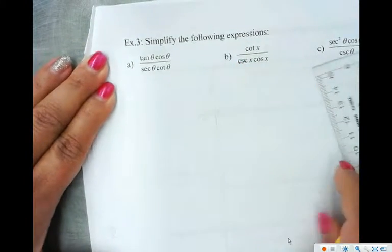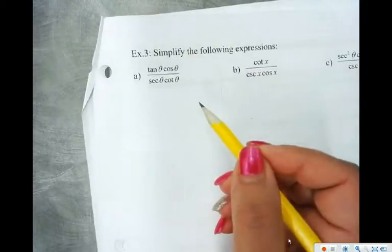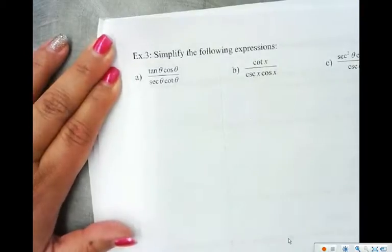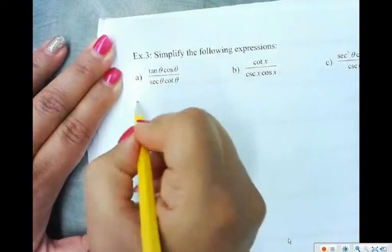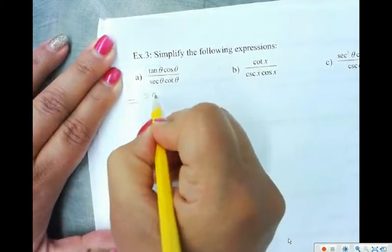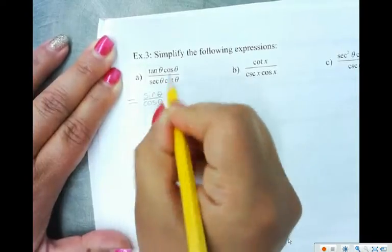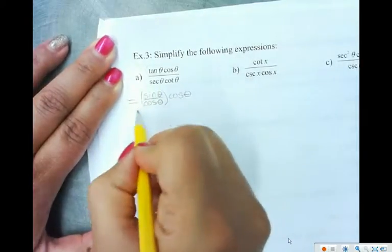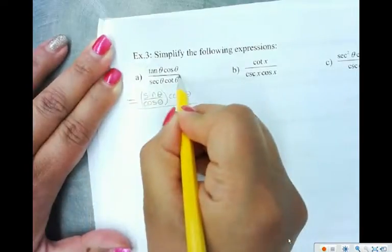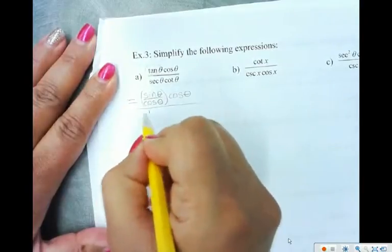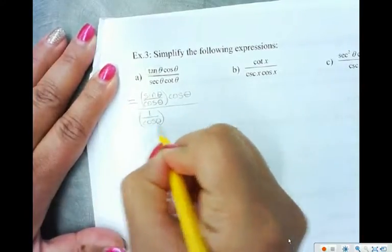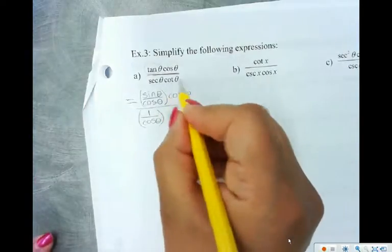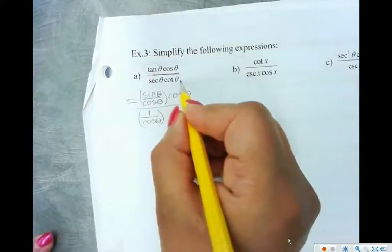So I'm just going to work down here. It says simplify the following expression. For this first one, what I have to try to do is get this as small and compact as I possibly can. So anytime I have a tan, I'm going to write it as sin over cos. So sin θ over cos θ, that's this tan right here. Then cos is just cos, leave it as is. Divided by - that's this divide line here - and then secant is 1 over cos. And so 1 over cot, which is cos over sin.